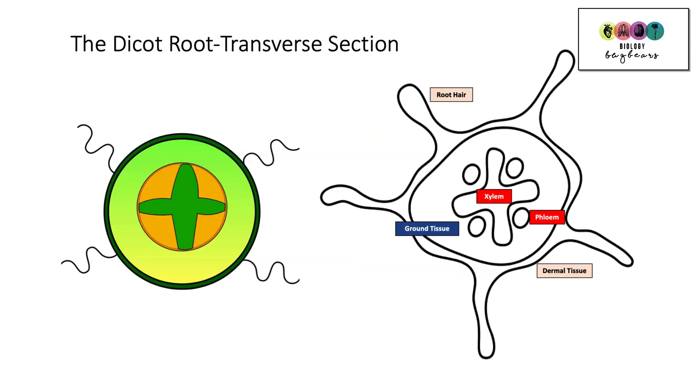So you could be asked to draw or to label the dicot root. And so often when you see diagrams in books, they're very elaborate and hard to draw. So I've tried to do the most simplistic one here, just an outline of a diagram that you could possibly produce in your exam. Just make sure you have all of those key labels and make sure that the xylem is in the centre in that star shape. That's the key feature that lets you recognize that it is the dicot root.